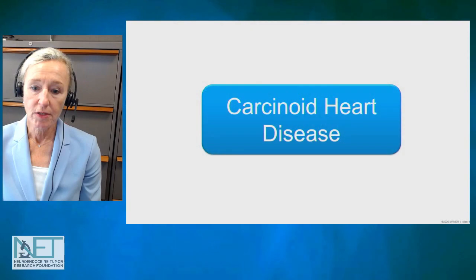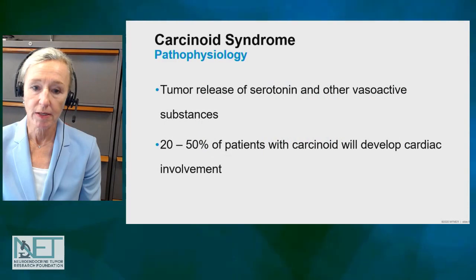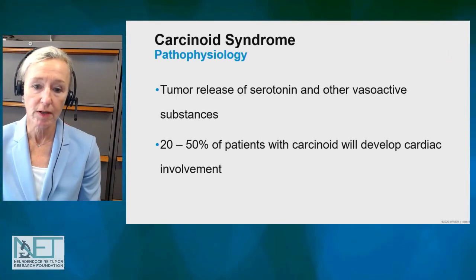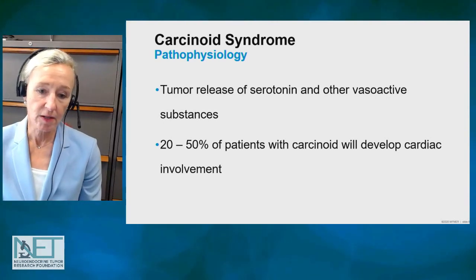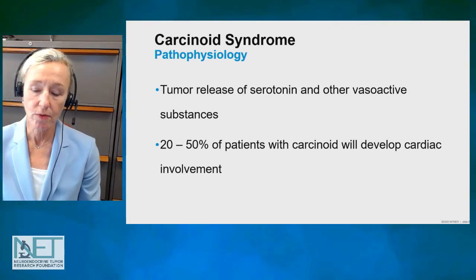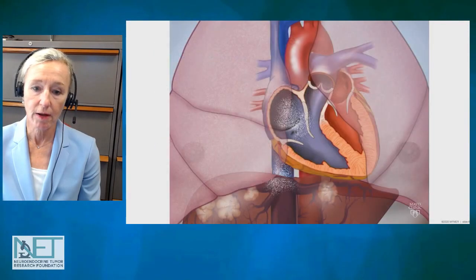In individuals who have carcinoid heart disease, the tumors are generally in the small bowel and metastasized to the liver. Tumor substances are released. The vasoactive substances that are released can cause injury to the right-sided valves, and it's estimated that 20% to 50% of individuals with neuroendocrine tumors with carcinoid syndrome will develop cardiac involvement.